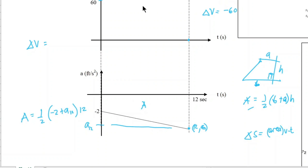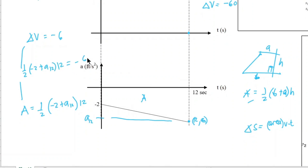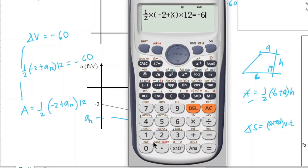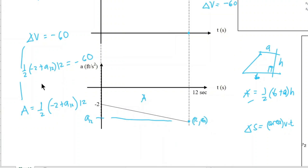Setting up the equation: delta v equals negative 60, so we have one-half times (negative 2 plus a_12) times 12 equals negative 60. Solving this in the calculator gives a_12 equals negative 8 feet per second squared.